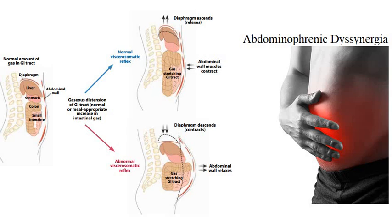This can happen because of food poisoning and many other things. Maybe you ate something bad but you didn't feel the food poisoning, yet you already have SIBO. So in the small intestine there is a lot of bacteria and you bloat. Now we focus on abdominophrenic dysnergia. In this first picture we add the diaphragm.